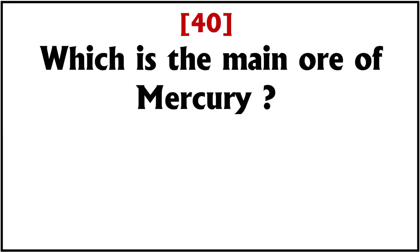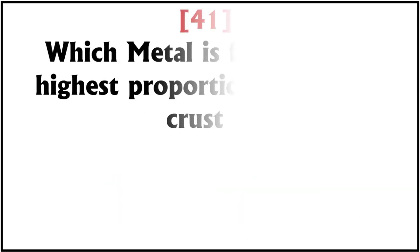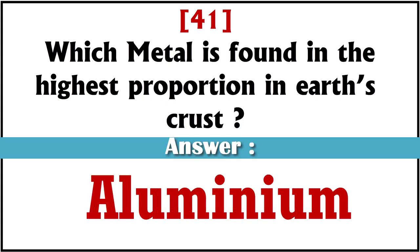Which is the main ore of mercury? Answer: cinnabar. Which metal is found in the highest proportion in earth's crust? Answer: aluminum.